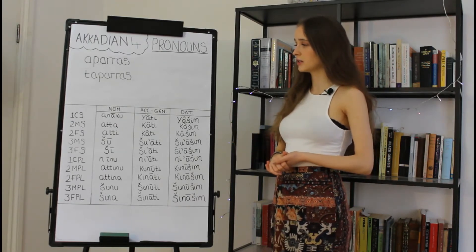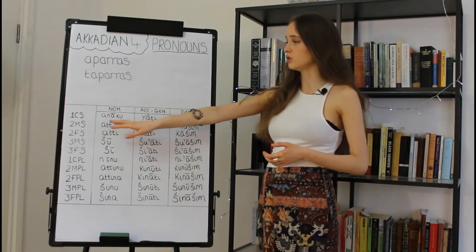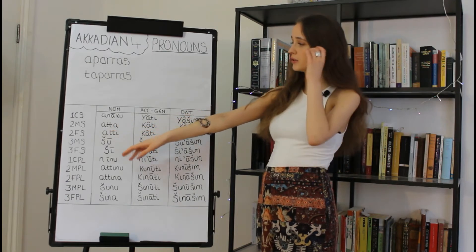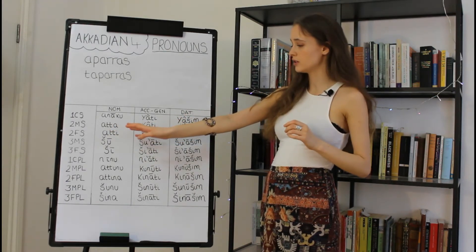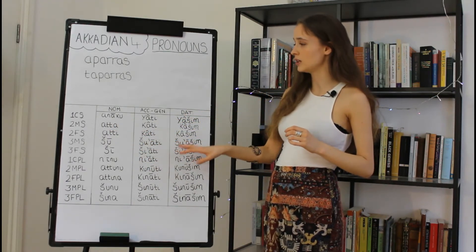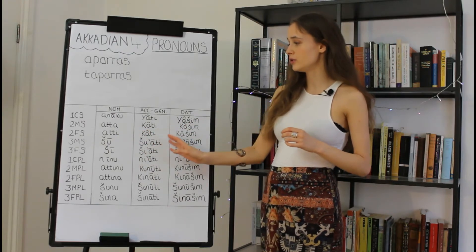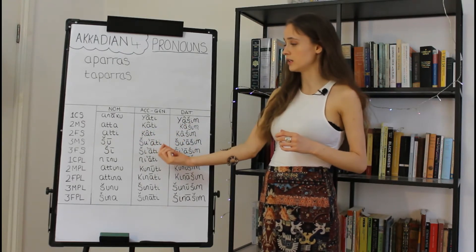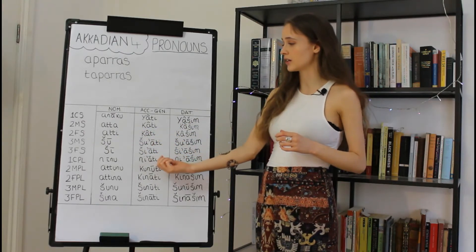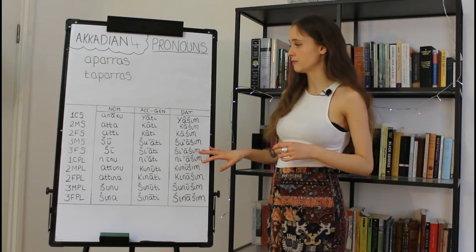Looking at our independent pronouns, we have different forms according to gender, number, and person. We also have different sets of words for each case: nominative, accusative, genitive — which have been formed into a single category here — and dative.